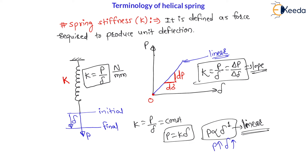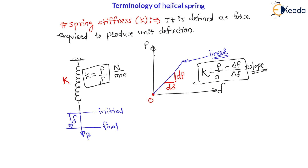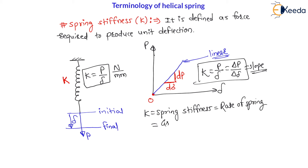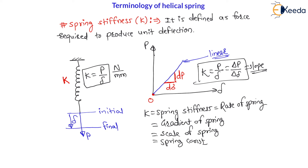There are various names for this spring stiffness K. It is also called rate of spring, gradient of spring, scale of spring, and spring constant — all are very important names. And this is nothing but the slope of the force versus deformation diagram.